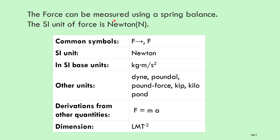Force can be measured using a spring balance. The SI unit of force is Newton (N), and the common symbol used is capital F. The SI base unit is kg·m/s². Derived from other quantities: F = ma, where F means force, M means mass, and A means acceleration. The dimensions are: mass × length × time to the power of minus 2.